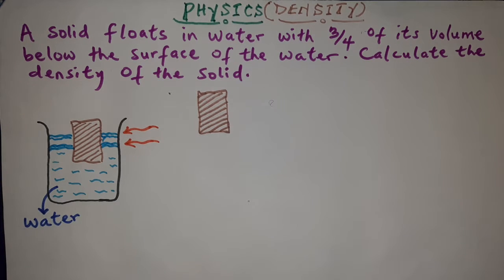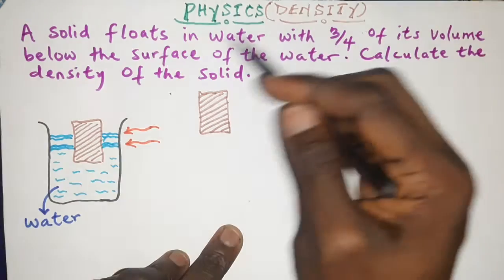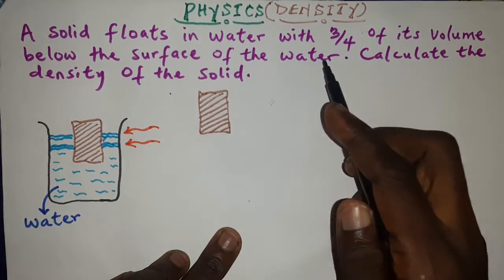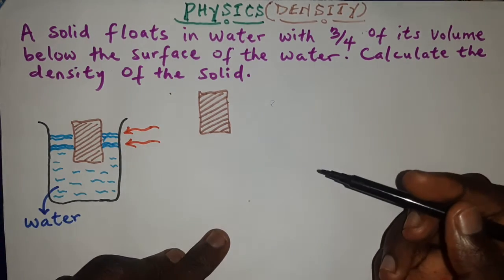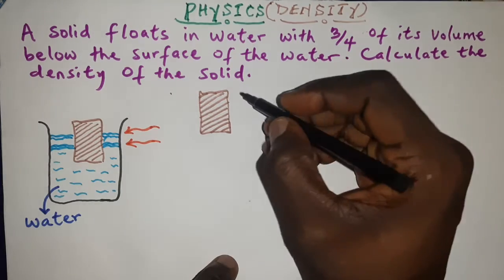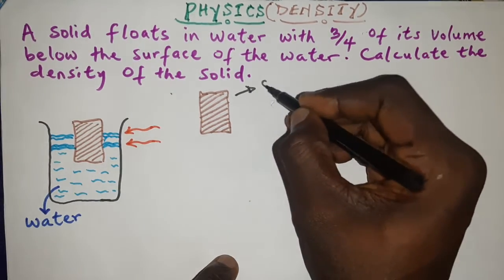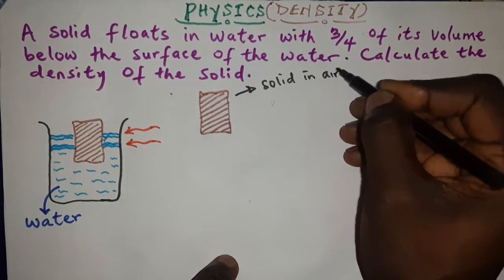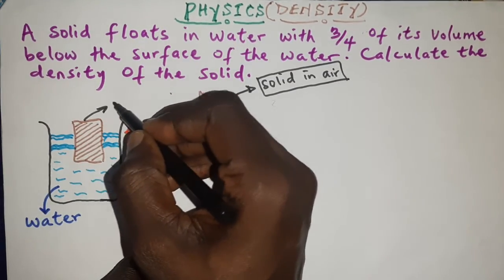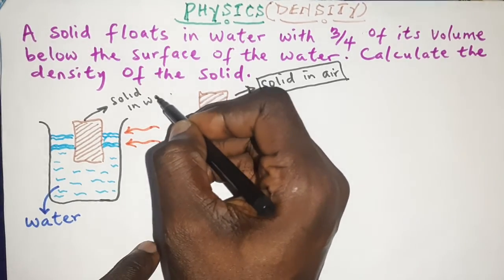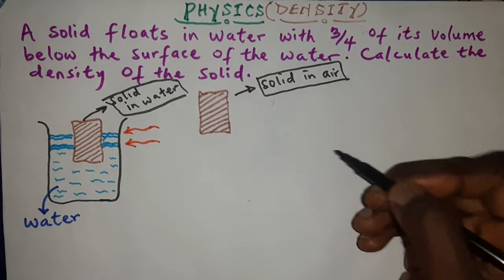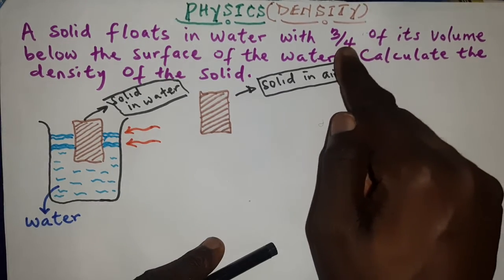We have an interesting question here. A solid floats in water with 3/4 of its volume below the surface of the water — calculate the density of the solid. I gave a pictorial interpretation of the question: here I have the solid in air, and here I have the solid in water. According to the question, 3/4 of its volume is below the surface of the water.